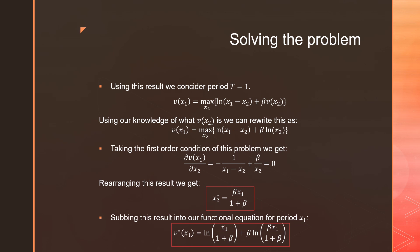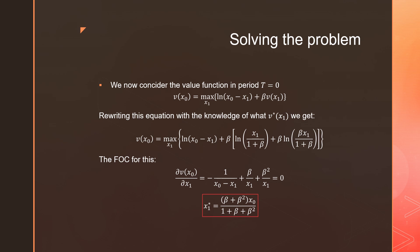We now consider the value function at T equal to 0. Following the same pattern as before, rewriting this equation with the knowledge of what V*(X_1) is, we get the following equation—we're taking what our value function in X_1 at its optimum would be.